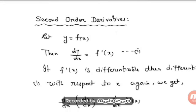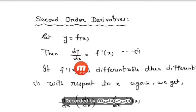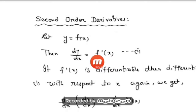Hello students, today let us start second order derivatives. So far we have done derivatives of different types of functions using different methods of differentiation. Suppose y is equal to f(x) is given; if you find the derivative of y with respect to x, that is d/dx of y, you can denote it symbolically by f'(x), and this is your first derivative.